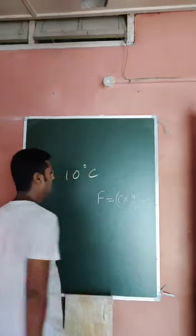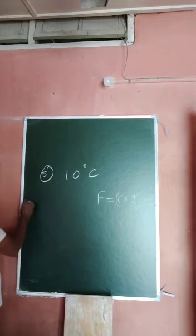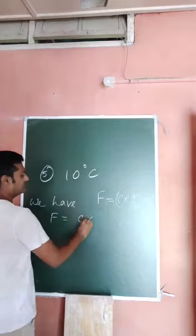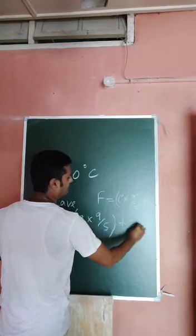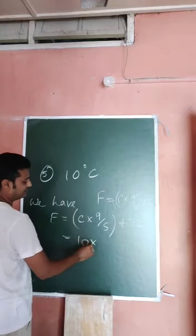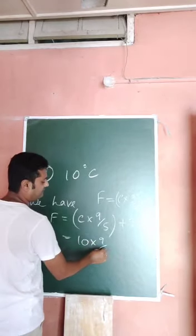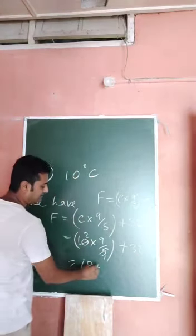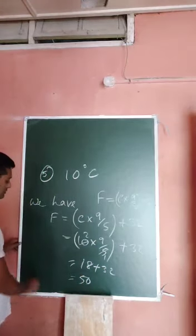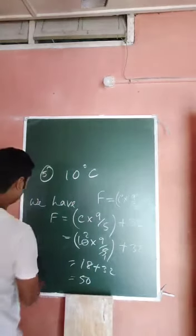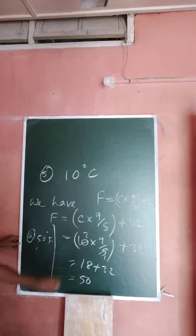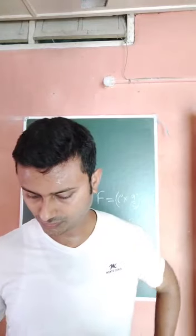So F = C × (9/5) + 32. Here C = 10, so F = 10 × (9/5) + 32 = 18 + 32 = 50. Therefore F = 50 degrees Fahrenheit. So the correct option is 50 degrees Fahrenheit. In my next video I will discuss the true and false questions.